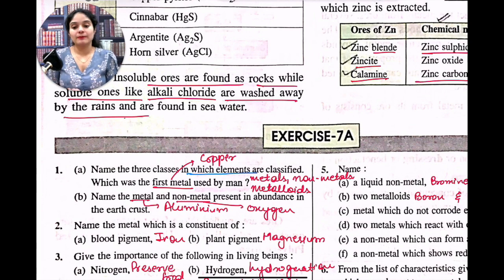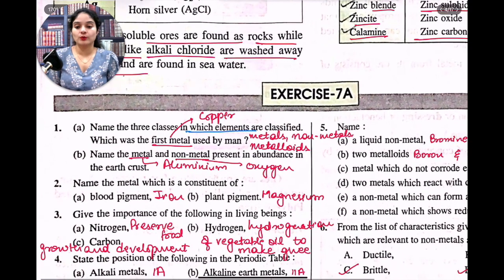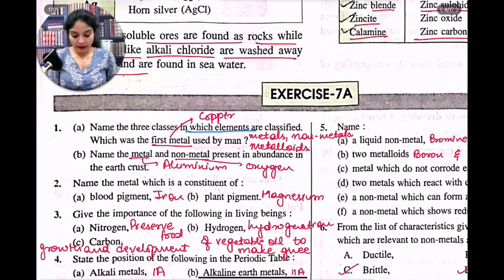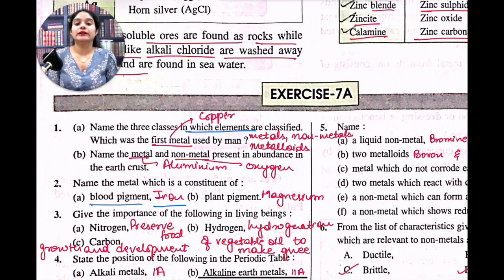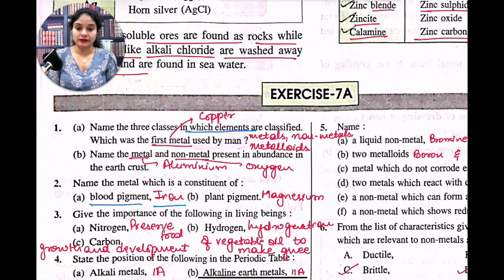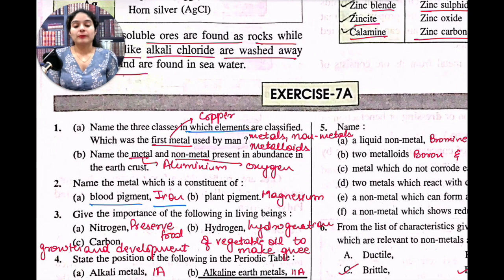Name the metal which is a constituent of blood pigment. The answer is iron — that's why they say you need iron consumption so that your blood is good, for example by eating a lot of green leafy vegetables. Now for plant pigment, the answer is magnesium. Plant pigment means chlorophyll, and chlorophyll contains magnesium.